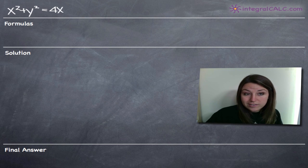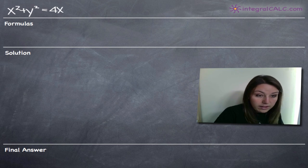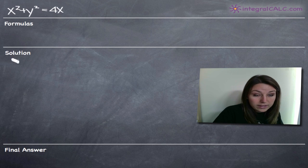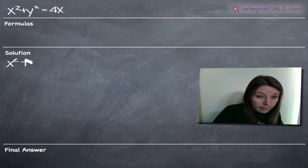We're going to be finding those two pieces of information, and the way that we're going to do it is first by collecting all terms on one side of the equation. So we're going to subtract 4x from both sides and we'll end up with x squared plus y squared minus 4x equals zero.